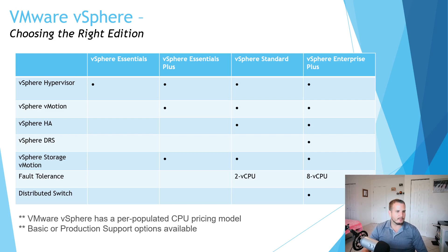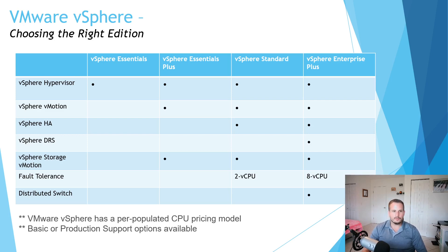Going from vSphere Essentials Plus to vSphere Standard is what I would normally recommend unless you have those smaller use cases. You still get vMotion and Storage vMotion, but you also get vSphere HA and fault tolerance if you have a use case for it. The big thing to note is that now you're licensing on a core basis — per populated core — and this typically will include, especially if you get what's called an acceleration kit, the vCenter Standard license as well.